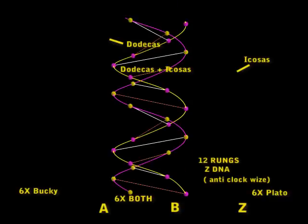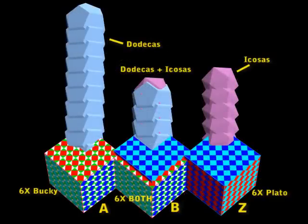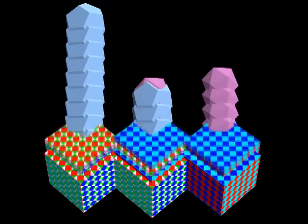Now we'll go back to the A, B and Z setup again. Notice that we get the cube of Bucky cubes on the Dodeca A side. And the opposite side, on the Z side, we've got Plato cubes around the icosa. Now, if you look at the B DNA in the center, we have the both. I've got Dodecas and icosas. And we have Plato cubes and Bucky cubes. We have a set of one and then a set of the other, and it keeps on going like that.